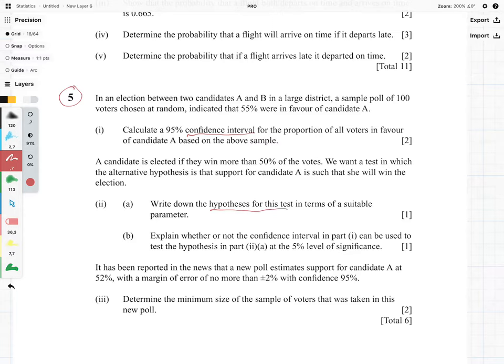It says in an election between two candidates A and B in a large district, a sample poll of 100 voters chosen at random indicates that 55 percent were in favor of candidate A. The question is calculate a 95 percent confidence interval for the proportion of all voters in favor of candidate A based on the above sample.